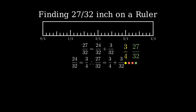27 32nds of an inch. As a decimal, 27 32nds is equal to 0.84375 inches. This lies between 3 quarters, 0.75, and 1 inch.